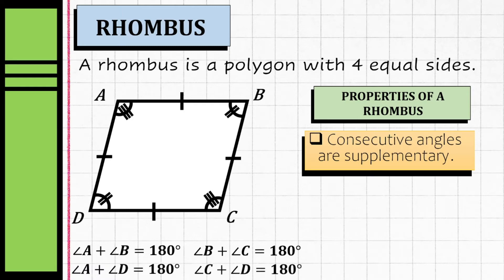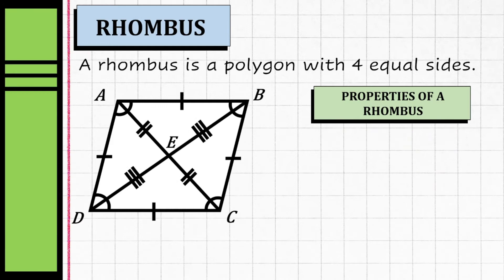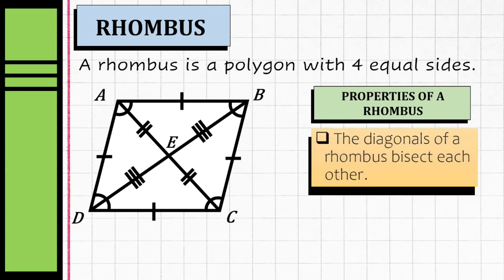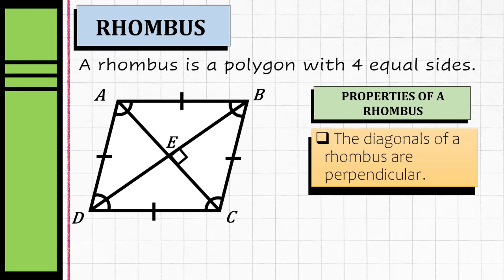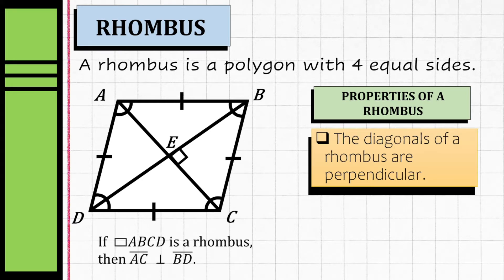Now let's proceed to the diagonals of our rhombus. The diagonals of a rhombus bisect each other. We can say that segment AE is congruent to segment CE, and segment DE is congruent to segment BE.